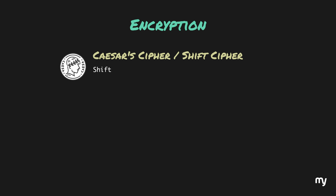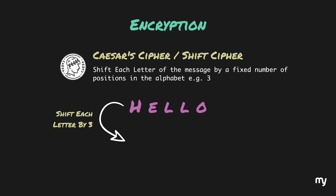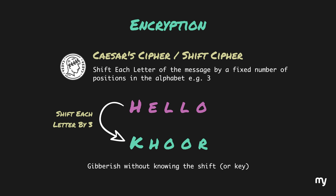Let's take a simple example of encryption, one that dates back over 2000 years. Julius Caesar used a basic encryption technique to protect messages of military importance, now famously known as Caesar's cipher, or the shift cipher. The idea? Shift each letter of the message by a fixed number of positions in the alphabet — let's say 3. So if we take the word 'hello' and shift each letter by 3: H becomes K, E becomes H, L becomes O, the next L also becomes O, and O becomes R. That gives us K-H-O-O-R. To anyone who intercepts this message without knowing the shift, it looks like gibberish. But if the recipient knows that each letter was shifted by 3, they can just reverse the shift and decrypt the message back to 'hello'.